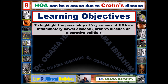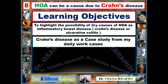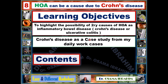The learning objectives from my presentation today are to highlight the possibility of secondary cause of hypertrophic osteoarthropathy (HOA) in inflammatory bowel disease — Crohn's or ulcerative colitis — which can be considered as a secondary cause for that pathology. I also present one case from my daily work of Crohn's disease which can be a cause for HOA.